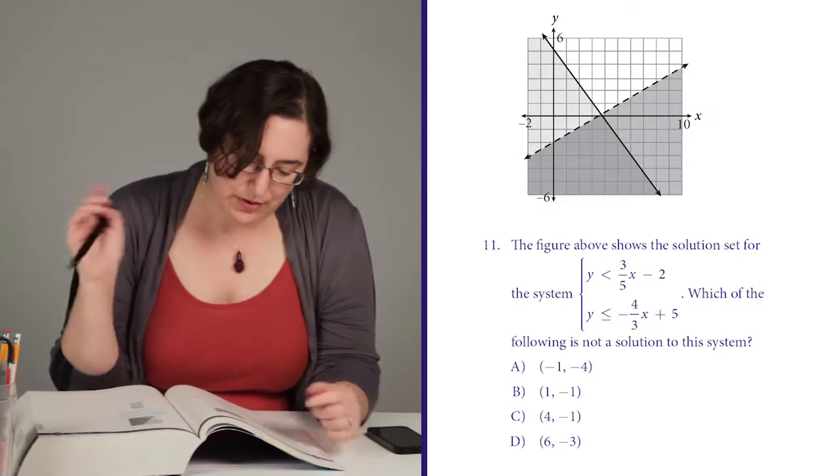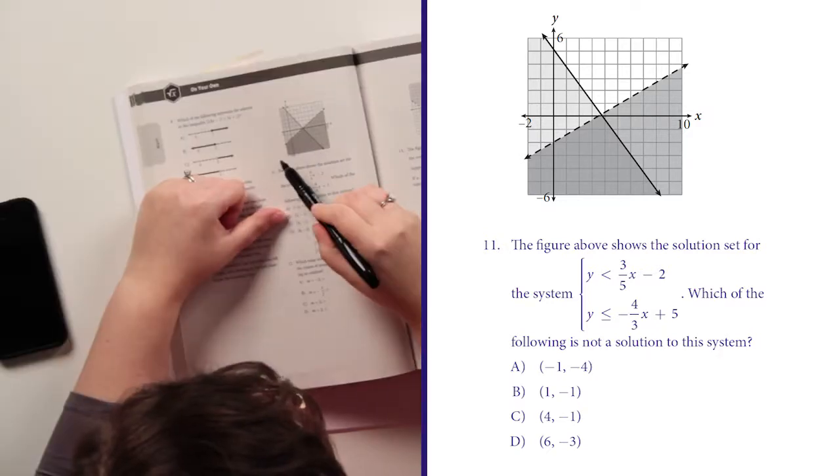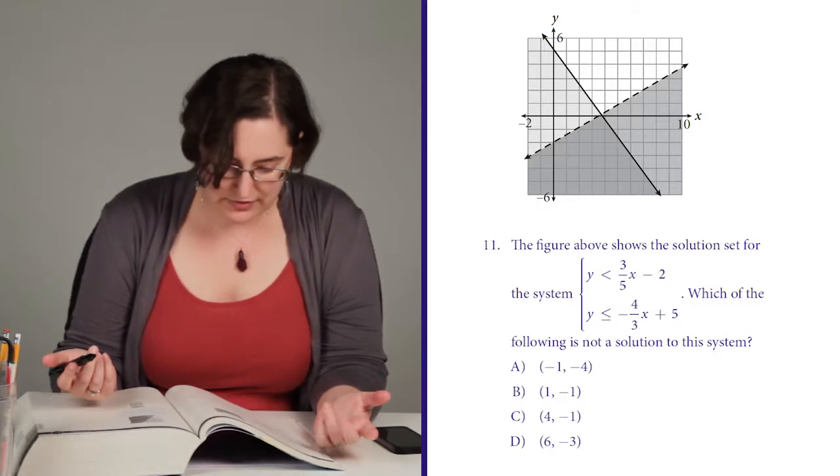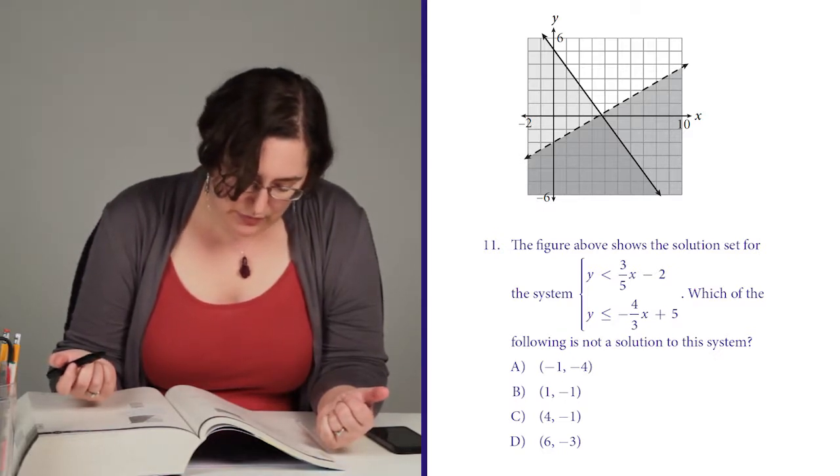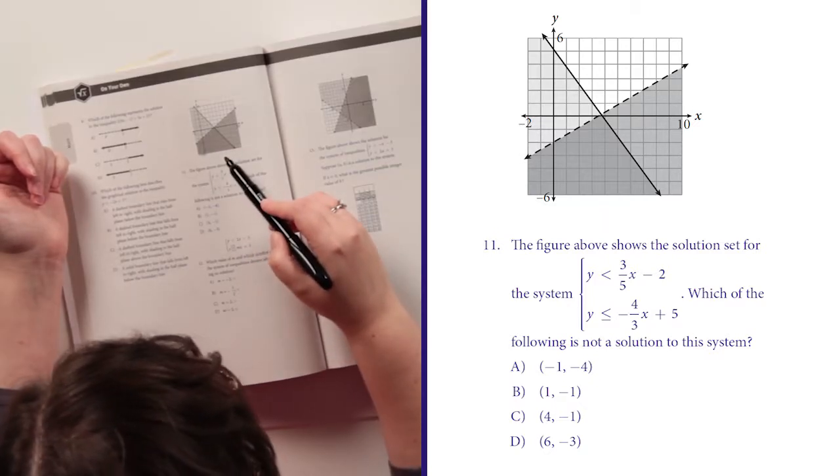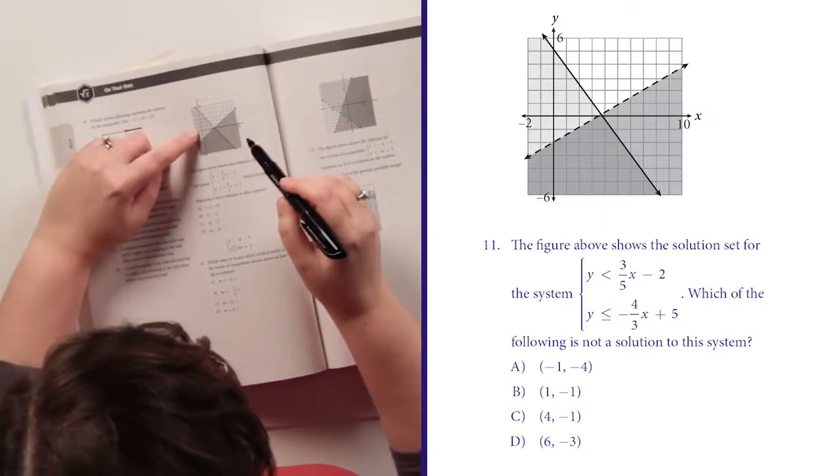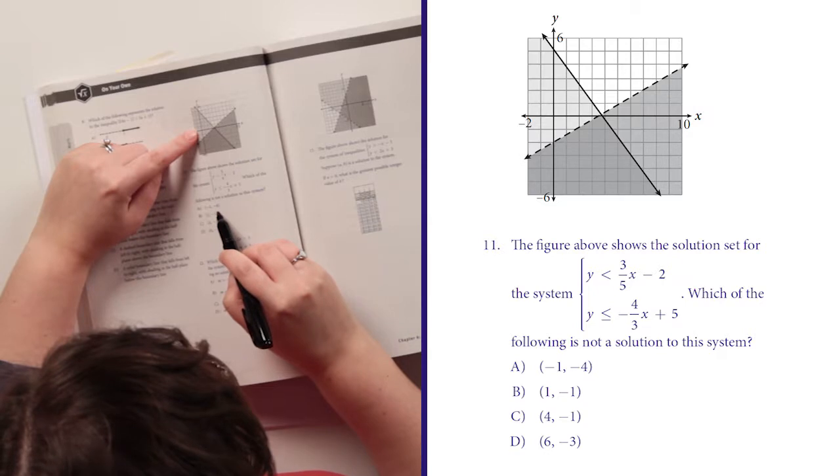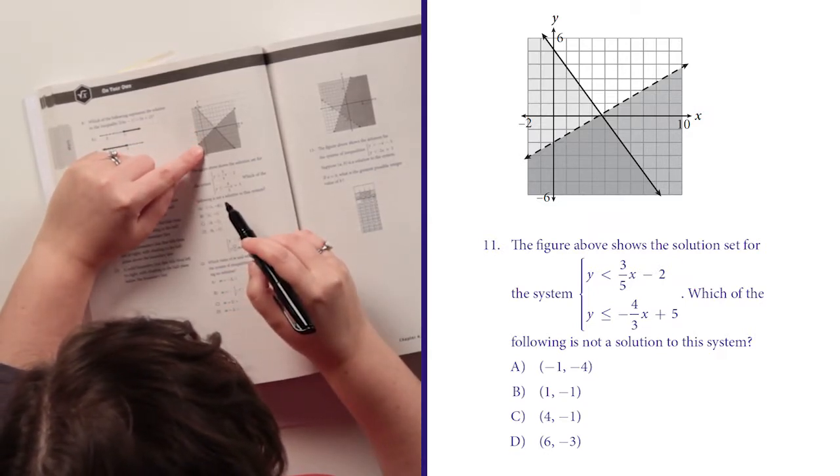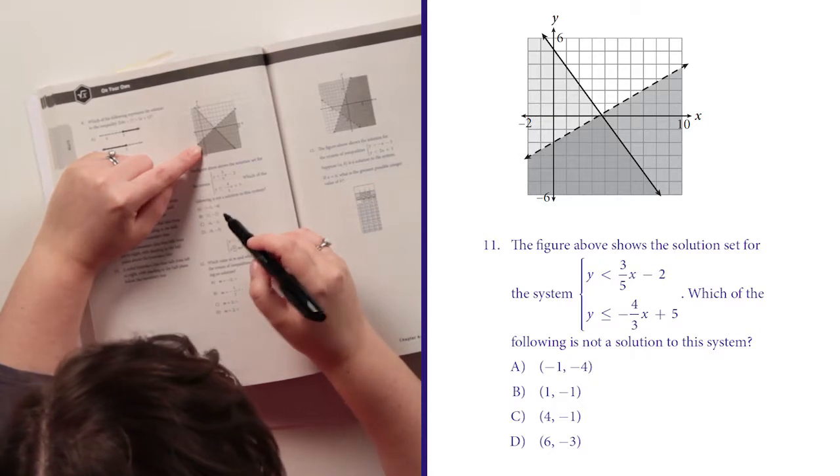So the solutions are the part where it overlaps on the graph, which they're conveniently giving to me. That's really nice. I don't have to draw it myself. And we're looking for something that isn't a solution, so something that isn't in this overlapping part.